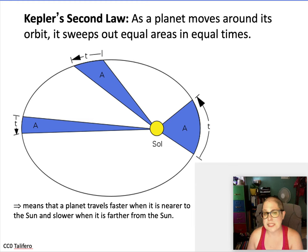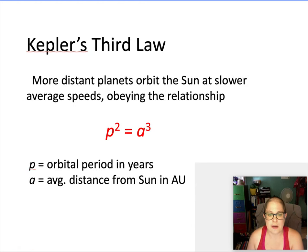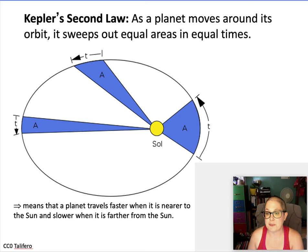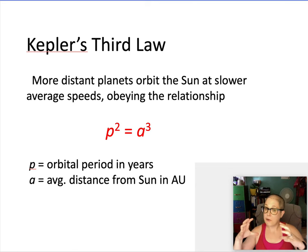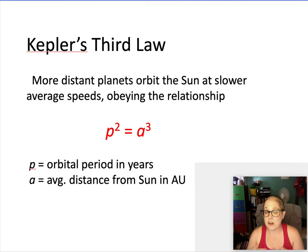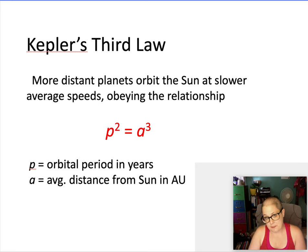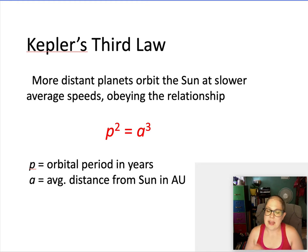Kepler's third law took much more time for him to derive, but he discovered a relationship that worked for all the planets. While the second law describes the speeds of a single planet in its own orbit, the third law compares the speeds of different planets with respect to each other — basically, the bigger the orbit, the longer it takes to go around. Specifically: P² = a³, where P is the period in years and a is the semi-major axis — also known as the average distance from the sun.